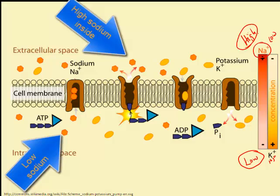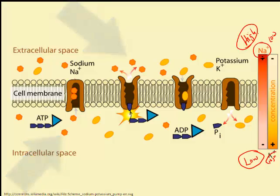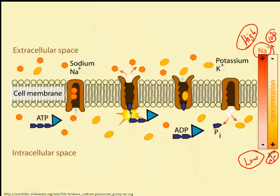As far as potassium goes, there's a high concentration of potassium on the inside and a low concentration on the outside. In order to create the electrical potential, the cell is going to pump out more sodium ions.